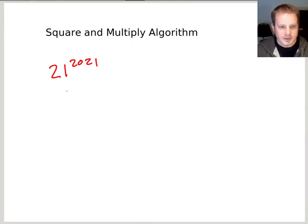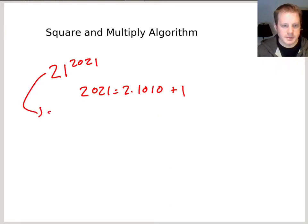So in fact, 2021 equals 2 times 1010 plus 1. And so now if we substitute that into this exponent, we can say 21 to the 2021 is the same as 21 to the 2 times 1010 plus 1.